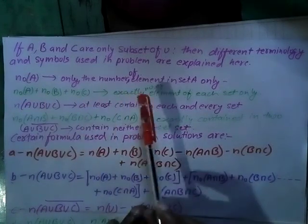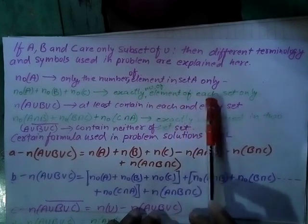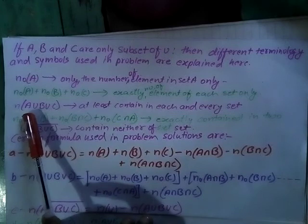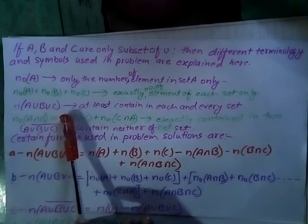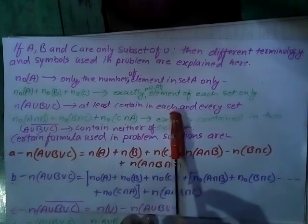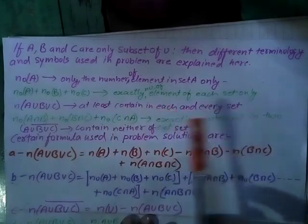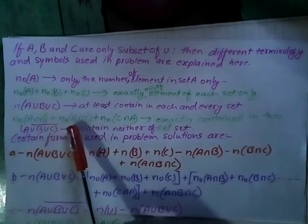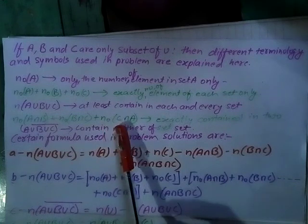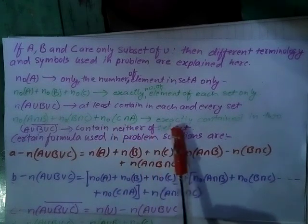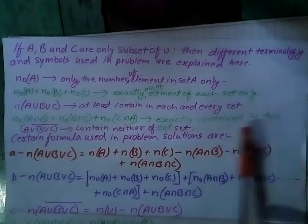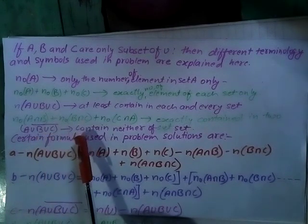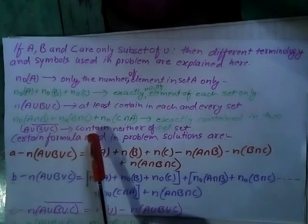N(A) only, N(B) only, and N(C) only give the number of elements of each set only. N(A∪B∪C) means at least contained in each and every set. N(A∩B) + N(B∩C) + N(C∩A) gives exactly the number of elements contained in two sets.